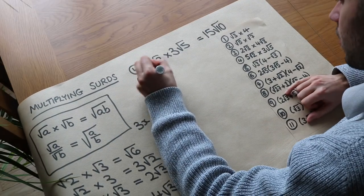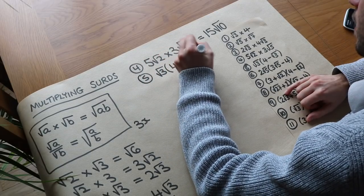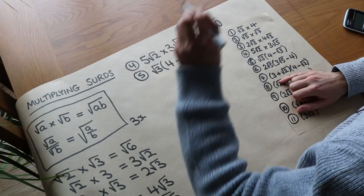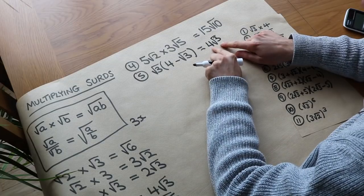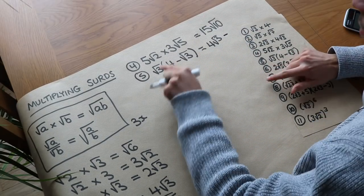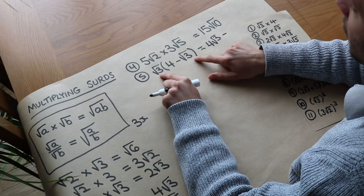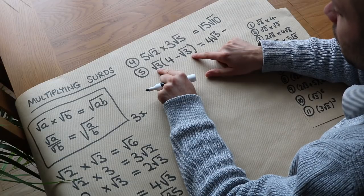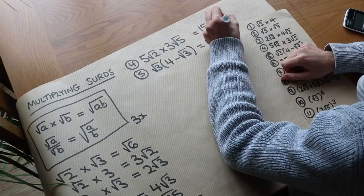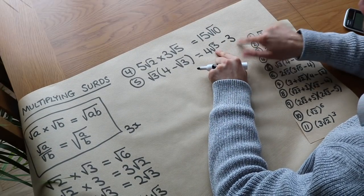What about question 5? We've got root 3 times (4 minus root 3). Well we can just expand out the bracket, so root 3 times 4 is 4 root 3 — we can't combine them further because they're not both surds. And then we have minus root 3 times root 3. Well we know that's going to be root 9, but if you ever have a square root of a number times itself it just gets rid of the square root, so root 3 times root 3 is 3. And those terms don't collect because one is a surd term and one is not.